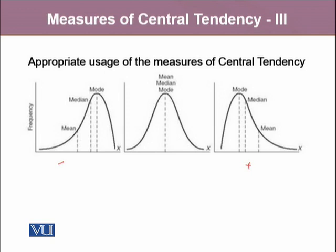Since we already know that in the symmetric distribution, our right tail is the mirror image of our left tail. Therefore, in a symmetric distribution, mean, median, and mode — all three are equal.